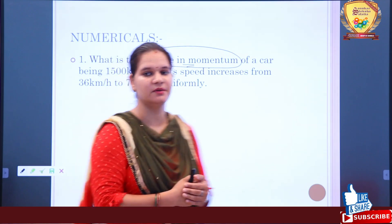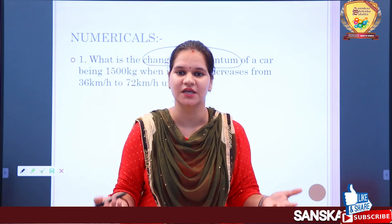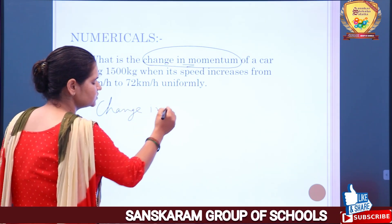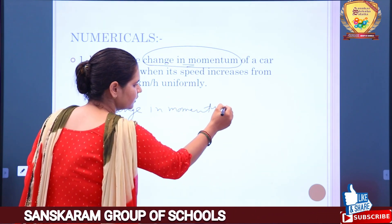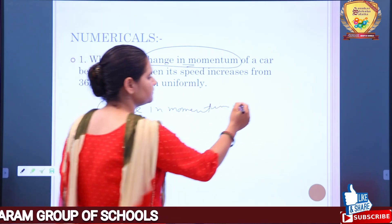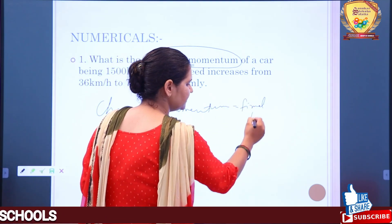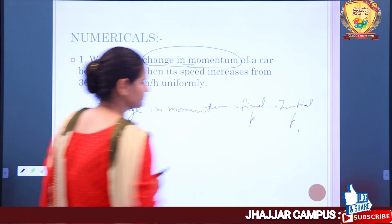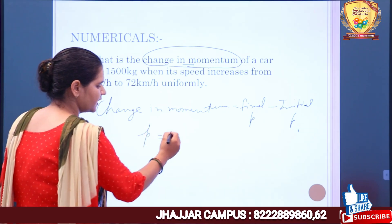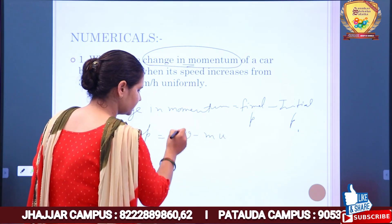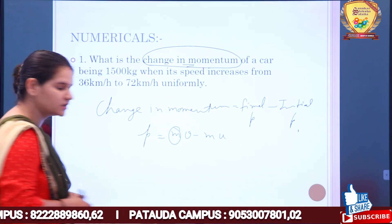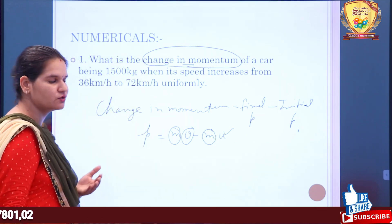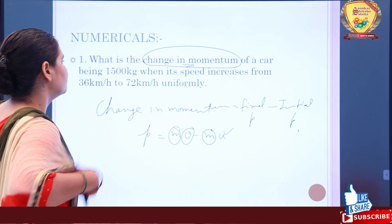The formula to calculate the change in momentum is: final momentum minus initial momentum. That is, change in p equals mv minus mu, where m is the mass of the object, v is the final velocity, and u is the initial velocity of the object.